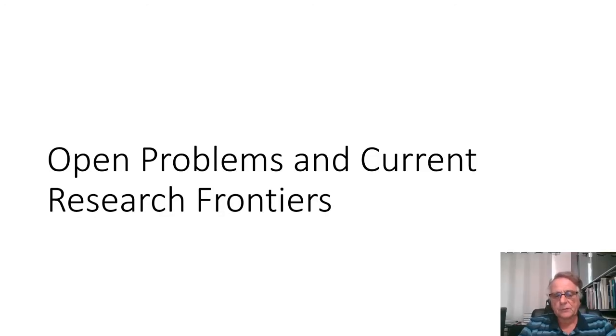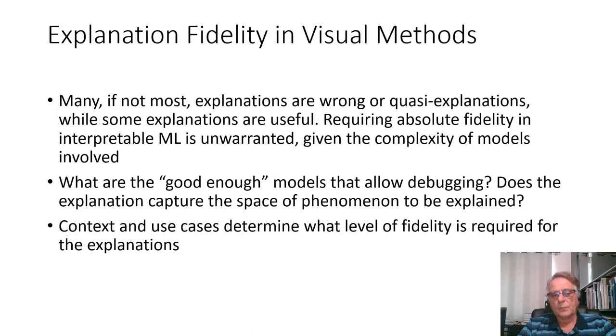Now, we are going to discuss open problems and current research frontier to close up this presentation. Many, if not most, explanations are wrong or quasi-explanations. While some explanations are useful. Requiring absolute fidelity in interpretable machine learning is unwarranted given the complexity of models involved. We need to clarify what are the good enough models that allow debugging so to get better models. Does the explanation capture the space of phenomenon to be explained or just touch it? Context and use cases determine what level of fidelity is required for explanation. And obviously, all these issues need to be involved in the next development.